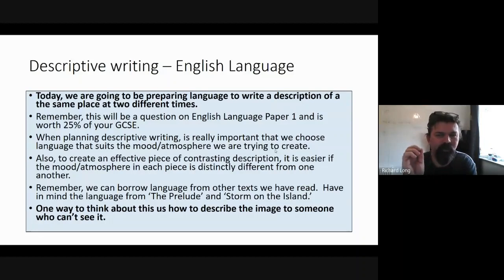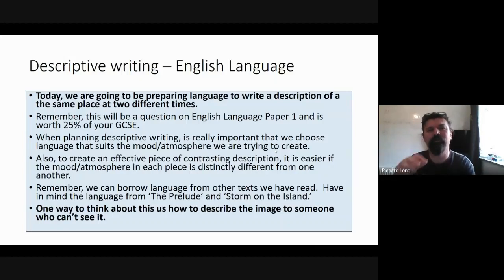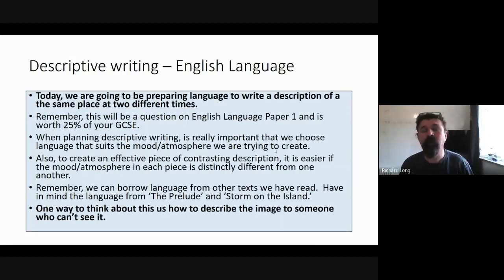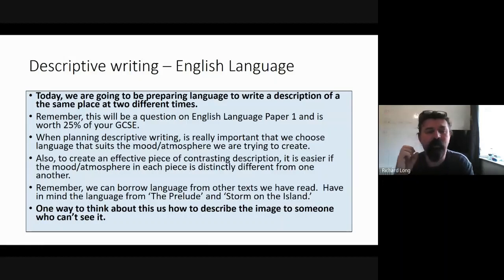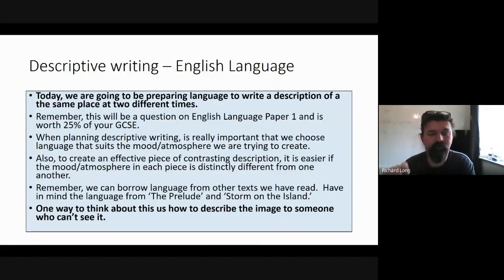The reason we're doing this is that what we're going to prepare for today is to write a description of the same place at two different times. You wouldn't get that in a GCSE, but what it's going to do is — quite often the scenes they give you could include the weather, and you're talking about the setting. If you've got those extremes, you'll have a bank of words in your head to use. It's important to remember this is worth 25% of the GCSE — a quarter of the GCSE — so extending your language and standing out is going to help you. When planning descriptive writing, it's important to choose language that suits the mood or atmosphere you're trying to create.